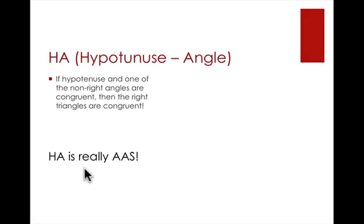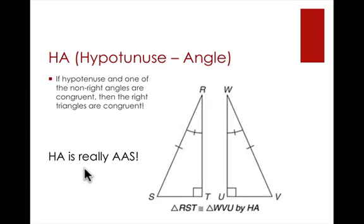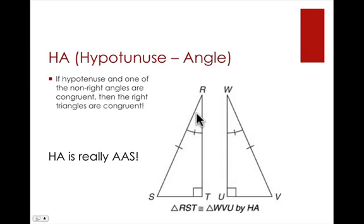HA is really AAS. If we go angle, the right angle, angle, side — that's AAS. If you're looking at the right triangle and you have the hypotenuse — the longest side — and an angle that is not the right angle, then by hypotenuse-angle we can say the triangles are congruent. For example, triangle RST is congruent to triangle WVU by the HA theorem.